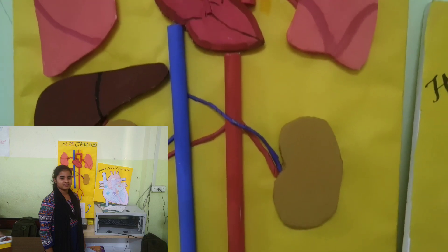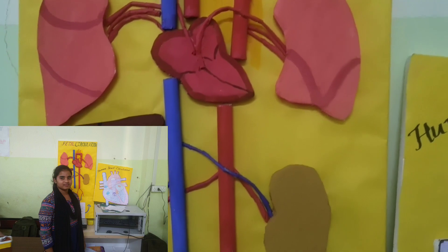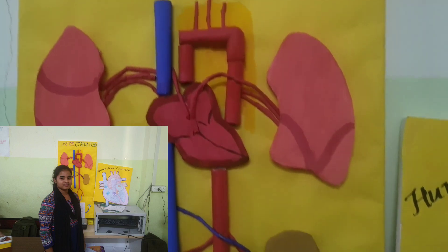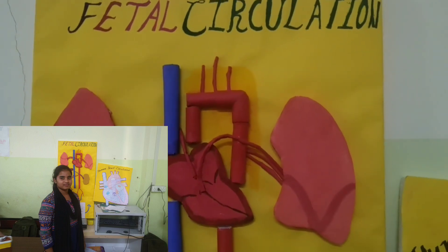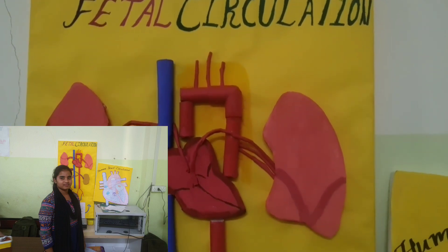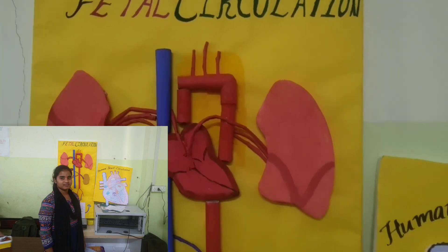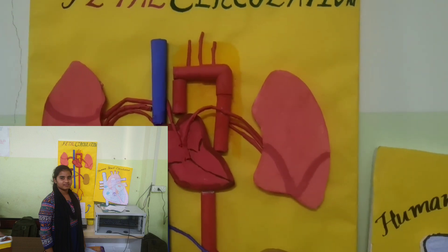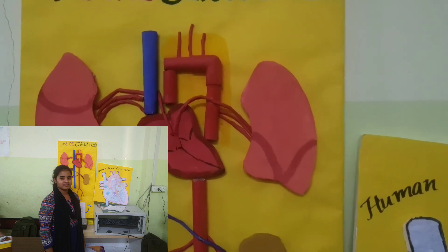In fetal circulation, blood flows to the baby from the placenta through the umbilical cord. The umbilical cord has two arteries and one vein.